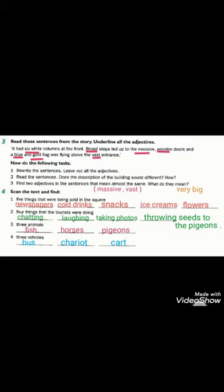Number three. Find two adjectives in the sentences that mean almost the same. What do they mean? يجب أن أستخرج من هدول الجمل صفتين بيعطوني نفس المعنى، وإيش معناهم هون ورد بالنص. Here we have the two adjectives, massive and vast. These two adjectives means very big. Massive وفاست نفس المعنى بيعطوني معنى very big، كبير جدا.